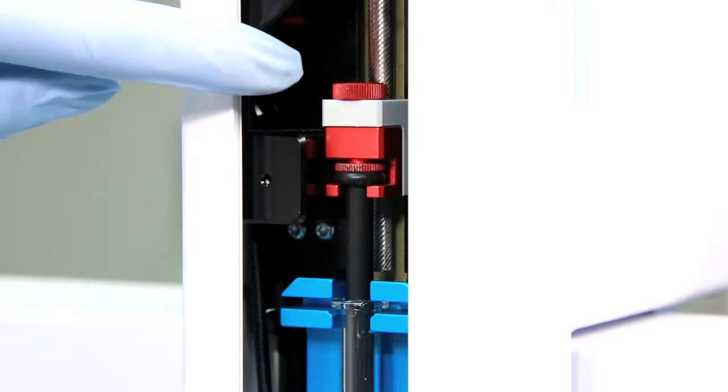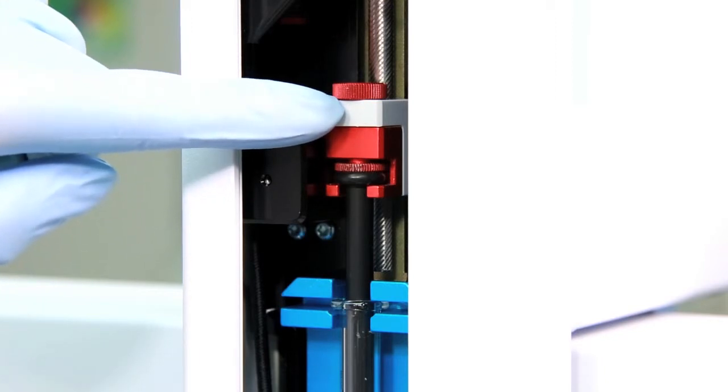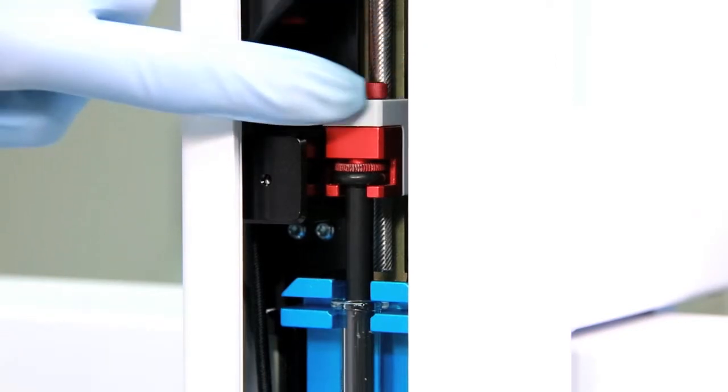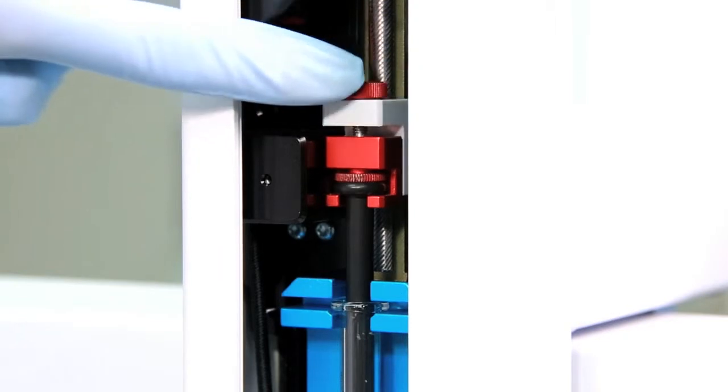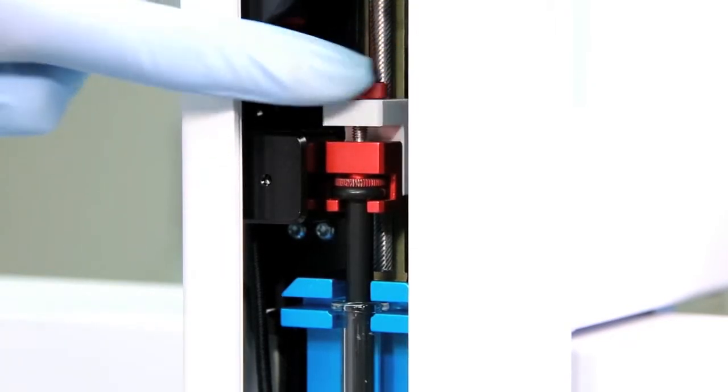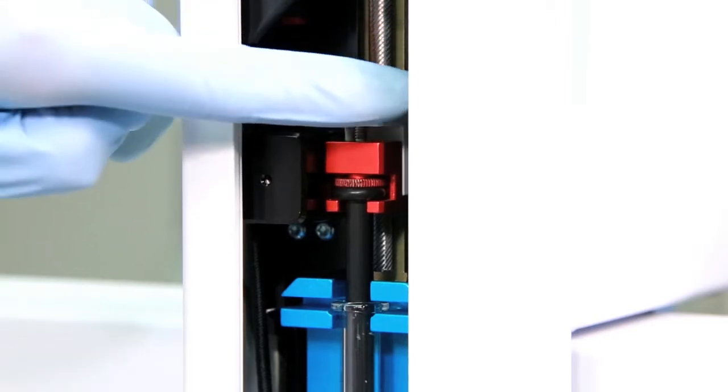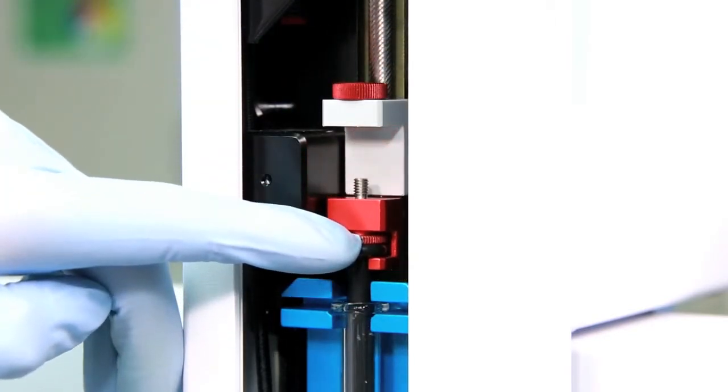To remove the syringe you first have to loosen the upper red retaining nut completely. You can see the plunger is moving down. When the nut is fully loosened, move the syringe plunger all the way down.